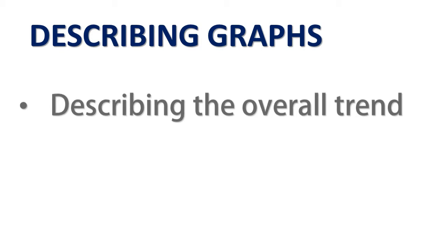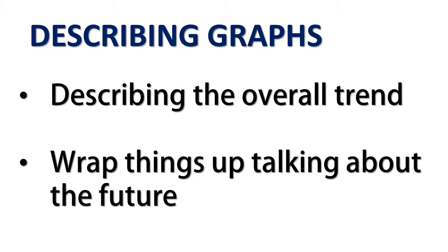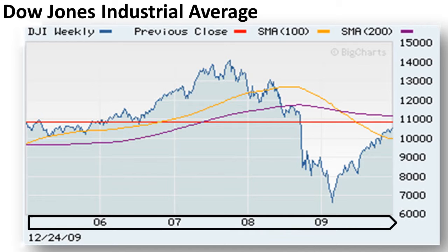When describing graphs, it is important to begin by describing the overall trend before going into details, and wrap things up by giving a description of the future. Also, it is a good idea to start by saying what it is you are talking about. A typical description will run as follows: Good morning ladies and gentlemen. Today, I would like to talk about the Dow Jones Industrial Average from 2006 to 2010.